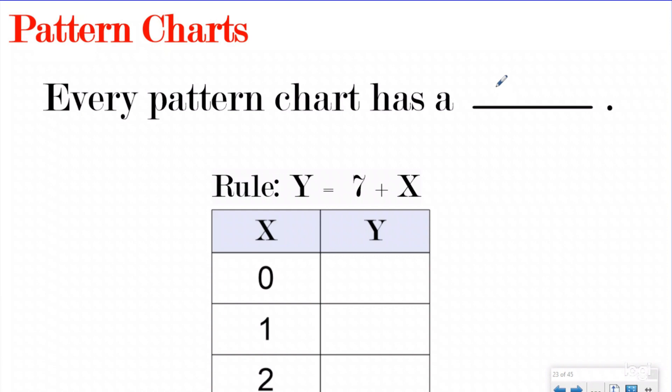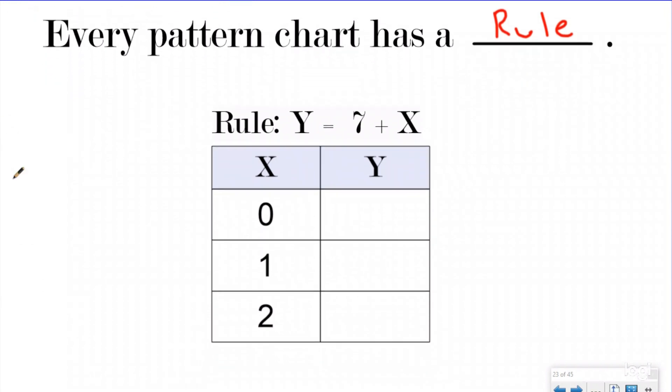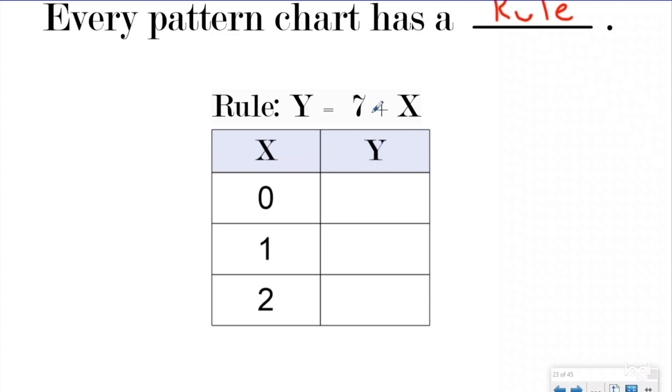It's important to know that every pattern chart has a rule. Sometimes the rules are written like this with two different variables. Sometimes it might just say add five, but we're going to be looking at rules with variables in them. Our rule for this pattern chart is Y equals seven plus X. Whatever number we have for X, we're going to plug into our rule and see what the corresponding term would be, which is a big math word which just means the numbers that go together for the rule.